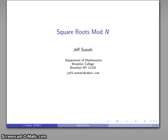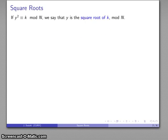One of the useful things we'll be able to do is to find the square root of an integer mod n. Our definition for square roots is the same as we have for the integers. If the square of y is congruent to k, then we say that y is the square root of k mod n.